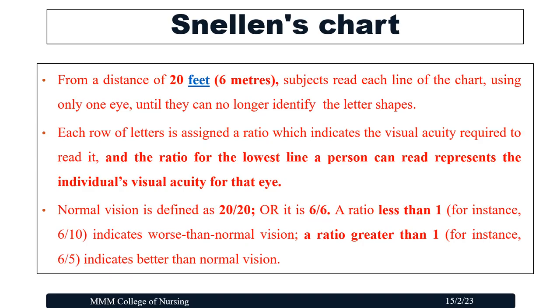While checking the visual acuity of a person using the Snellen's chart, we ask the patient to stand at a distance of six meters or 20 feet from the chart. The patient is then asked to close one eye and read the chart from the lower line. From this distance, subjects read each line using only one eye until they can no longer identify the letter shapes. The ratio for the lowest line a person can read represents the individual's visual acuity for that eye.